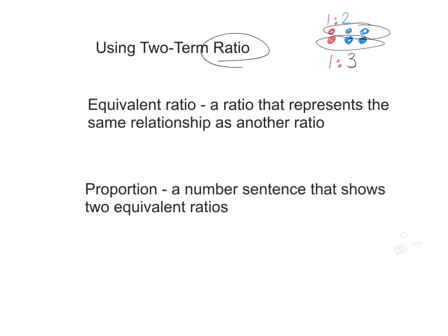If we wanted to take this a step further, we can actually write a number sentence that shows two equivalent ratios, and that's called a proportion. So if we ever mention a proportion, we're just writing a whole number sentence that shows two equivalent ratios.